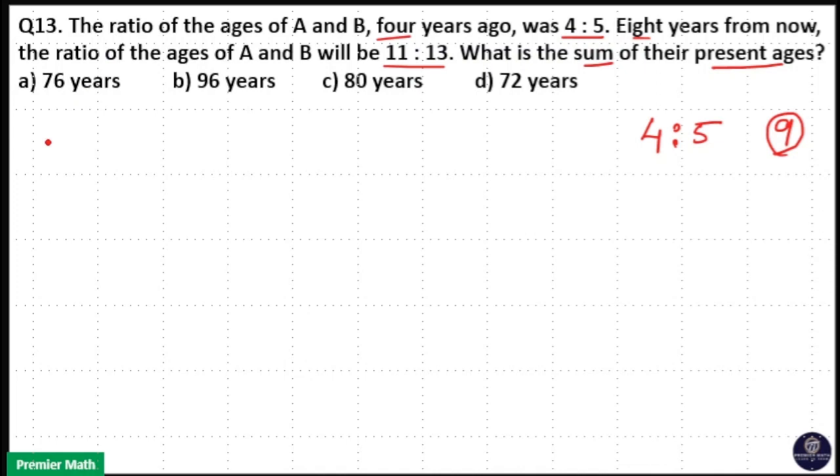So for the four years ago sum, we have to subtract 8 years from the present sum. This is the present sum of ages of A and B. We have to subtract 4 plus 4, which is 8 years, from the present sum. Then you will get the four years ago sum of A and B. That will be divisible by 9.